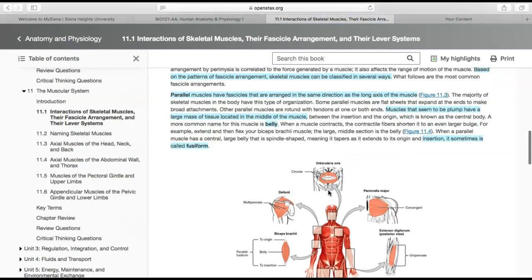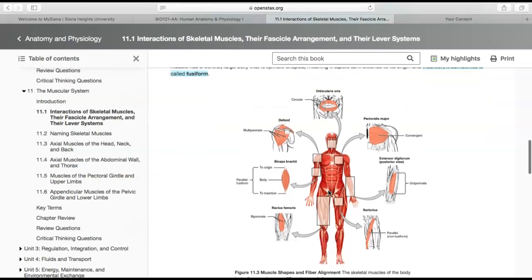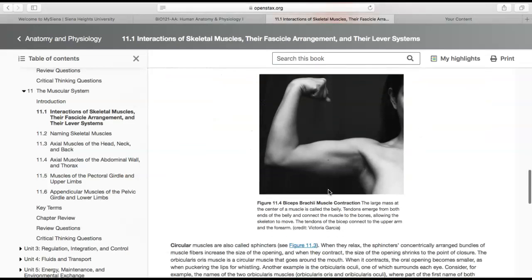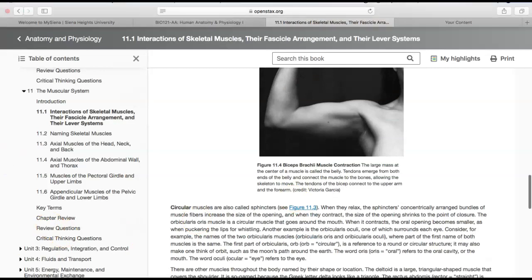When a parallel muscle has that central large belly and is spindle-shaped, meaning it tapers off at the end and extends at the origin and insertions, we call that fusiform. That's the first example. We'll next get into circular.